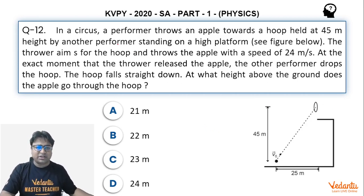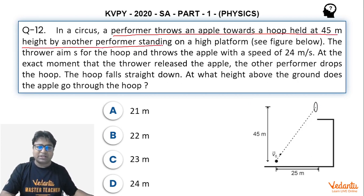The question says that a performer throws an apple towards a hoop held at 45 meter height by another performer. So this is the hoop and this is the horizontal distance given to us as 25 meter and this is the vertical distance given to us as 45 meter.